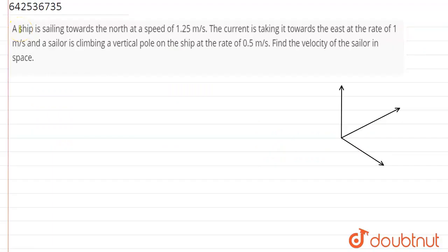Hello everyone. The question is: A ship is sailing towards the north at a speed of 1.25 m/s. The current is taking it towards the east at the rate of 1 m/s, and a sailor is climbing a vertical pole on the ship at the rate of 0.5 m/s. Find the velocity of the sailor in space.